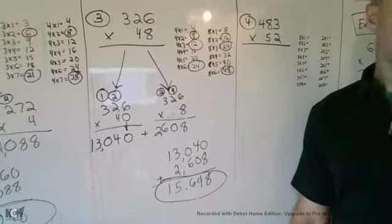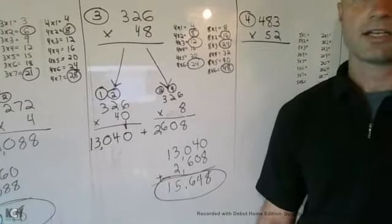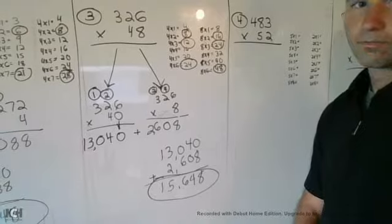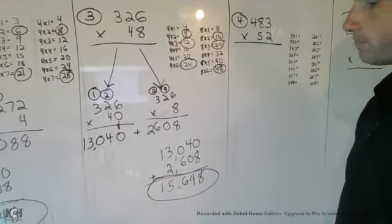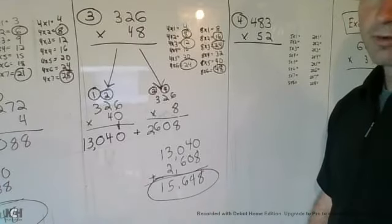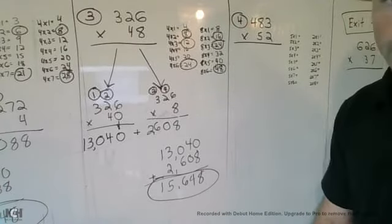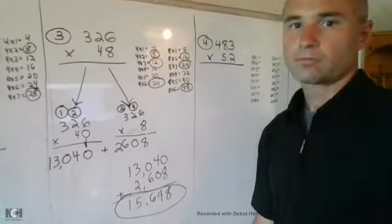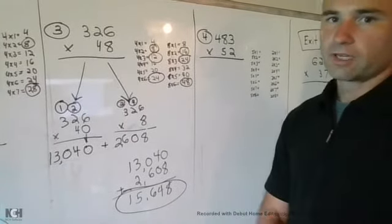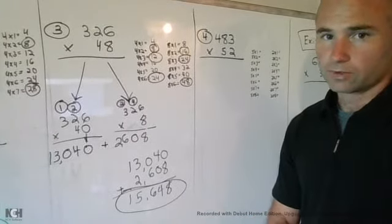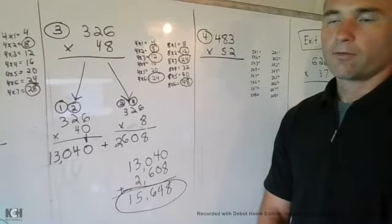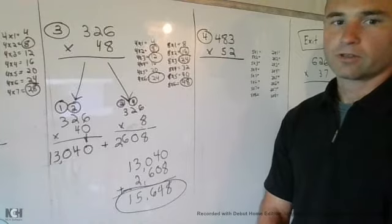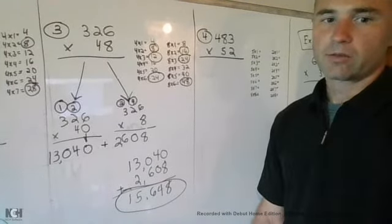So I hope you're seeing mistakes and you're identifying them. So 15,648 is our answer. Let's move on to the last problem before our exit ticket. 483 times 52. I wrote my 5 times tables and my 2 times tables to help me break this up and make it easier for me. Go ahead and solve the problem now.